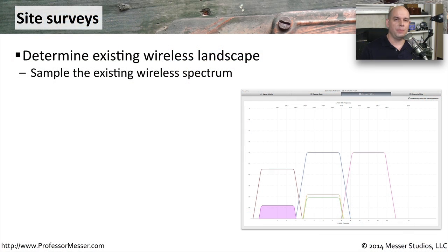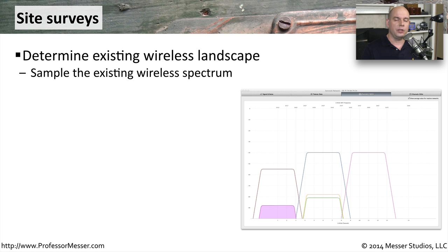Implementing a wireless network isn't something that you can simply click a button and have the best possible performance. You have to understand the wireless spectrum and what's happening currently before you can implement a new wireless device into that environment. One of the things you can do is to do a site survey. You need to understand what the existing wireless landscape happens to be. You can use scanning tools on a device or some specialized spectrum analyzers that can really tell you exactly what's going on with all of the radio signals in this particular area.